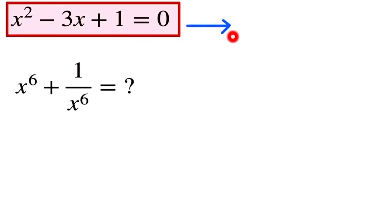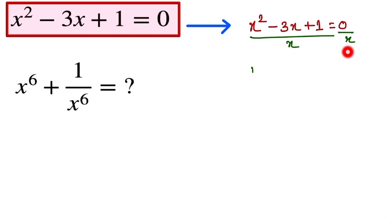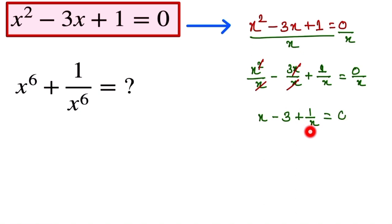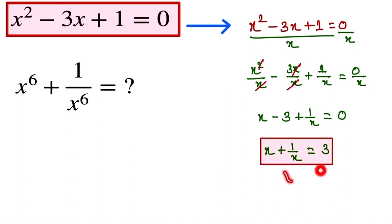First, we notice the equation x squared minus 3x plus 1 equals 0. We divide the entire equation by x on both sides, giving x squared over x minus 3x over x plus 1 over x equals 0. Simplifying, we get x minus 3 plus 1 over x equals 0, so x plus 1 over x equals 3.